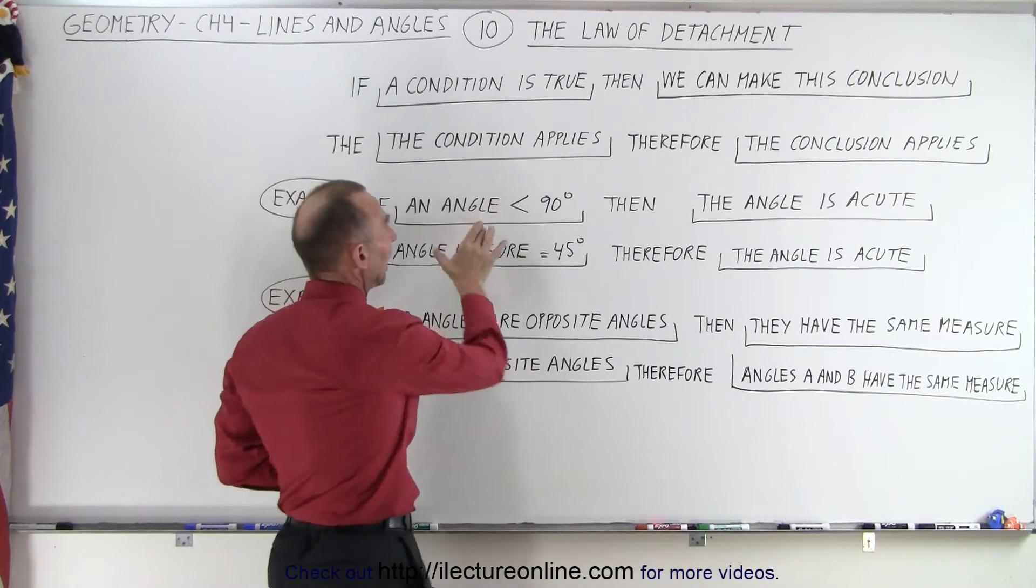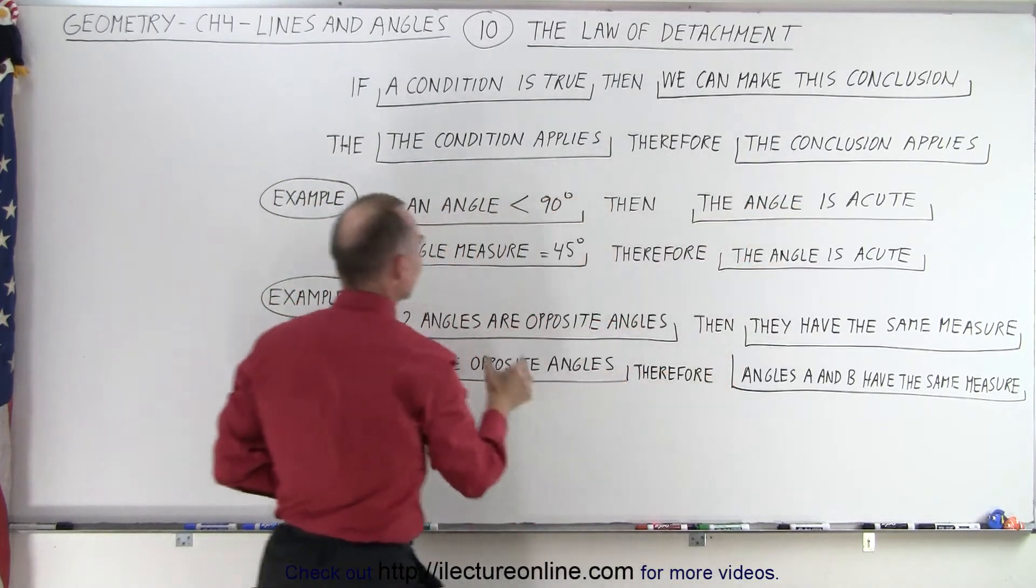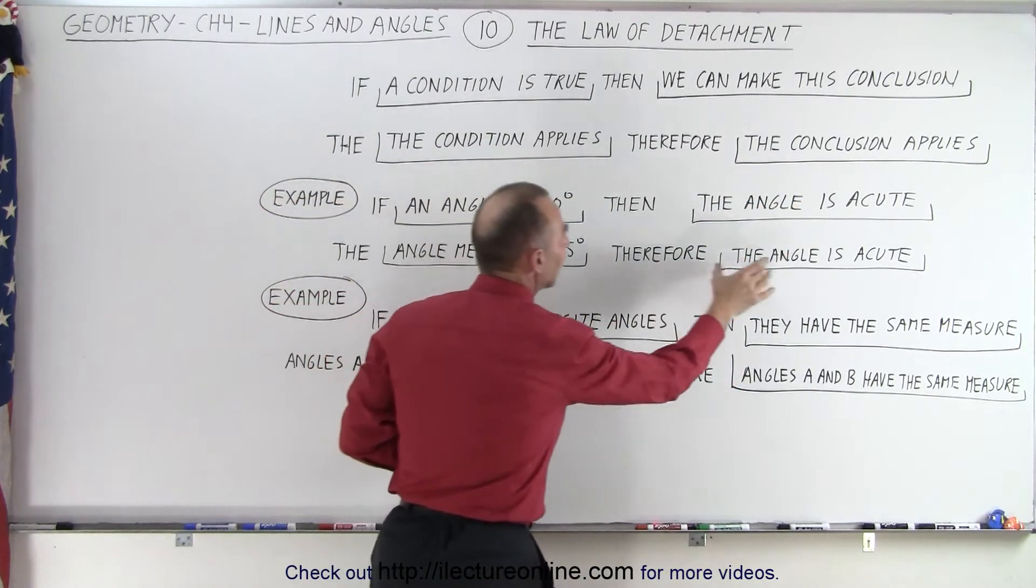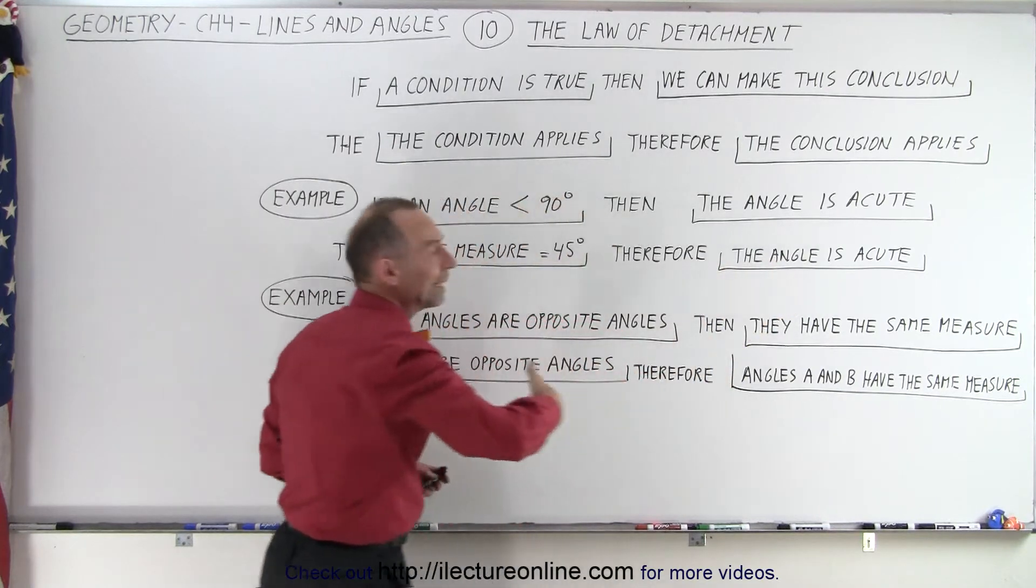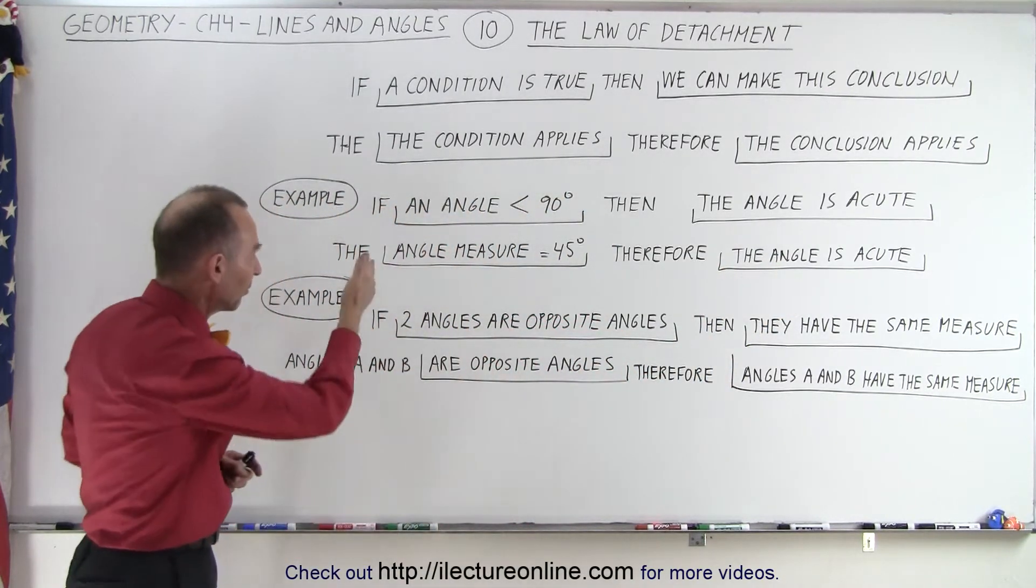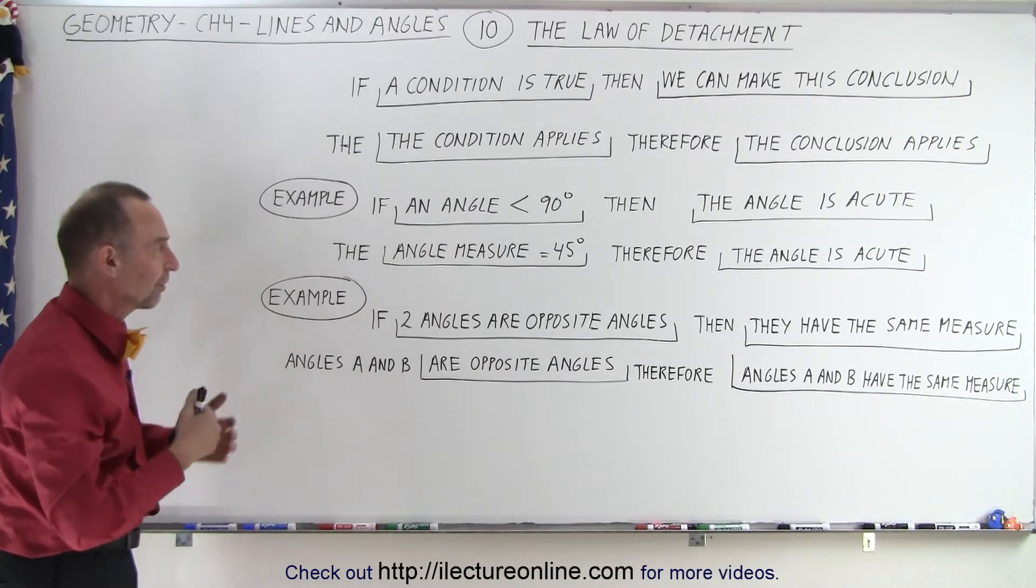We have a condition and then we have a conclusion. If it meets the condition, then it also meets the conclusion. We can then conclude that for the specific measurement or the specific observation.